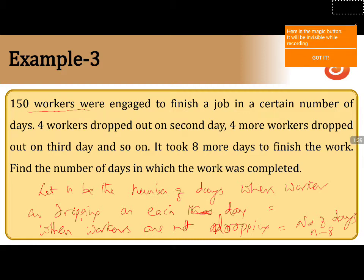Let us find out the series. First day 150, second day 146, third day 142 like this, n days we have worked to finish the job. So a is 150, common difference is minus 4.